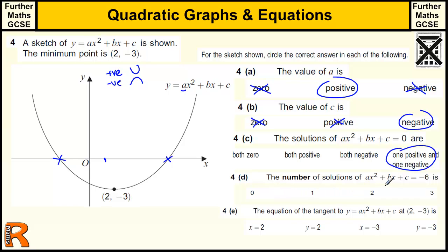The number of solutions for this equal to minus 6. Well, minus 6 would be down here somewhere. And this equation does not equal minus 6. The lowest it goes down is minus 3, so that's zero.